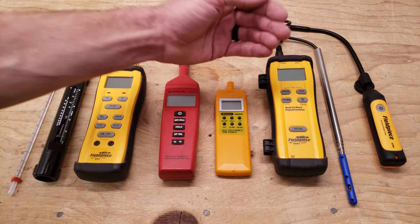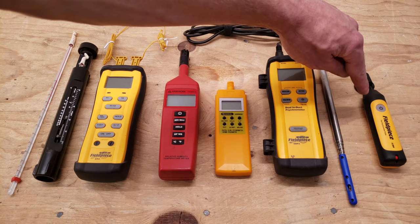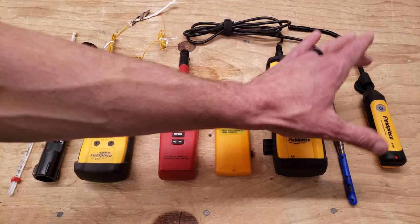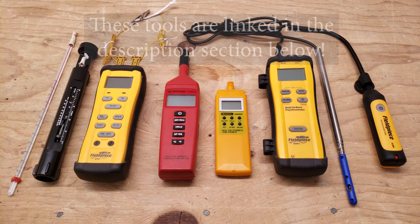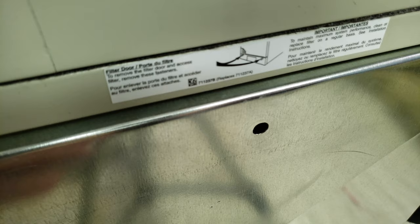But you got to remember as the system runs, your wet bulbs are going to lower, and that's going to make your target superheat change. This right here is a wireless probe, and through an app you can measure your indoor wet bulb temperature in real time. You can use the Fuel Piece Job Link app or another app for that. All these tools are linked down in the description section below, and I'm going to show you how each of these tools work.